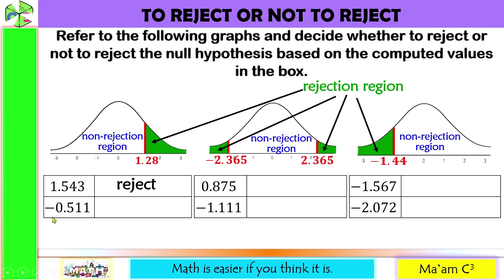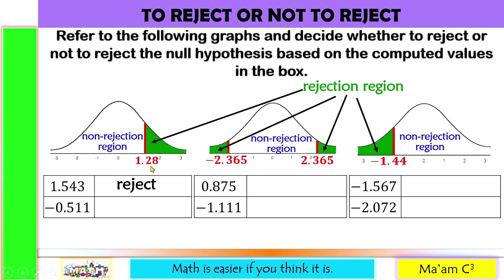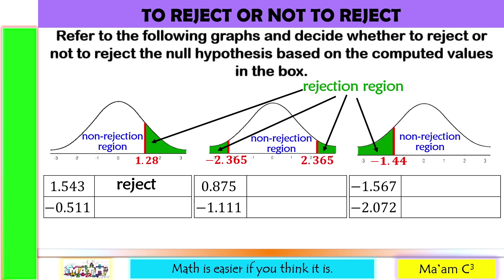Another computed value is negative 0.511. Negative 0.511 is less than 1.28, so it is on the left of the critical value. This lies on the non-rejection region. So our decision is do not reject.